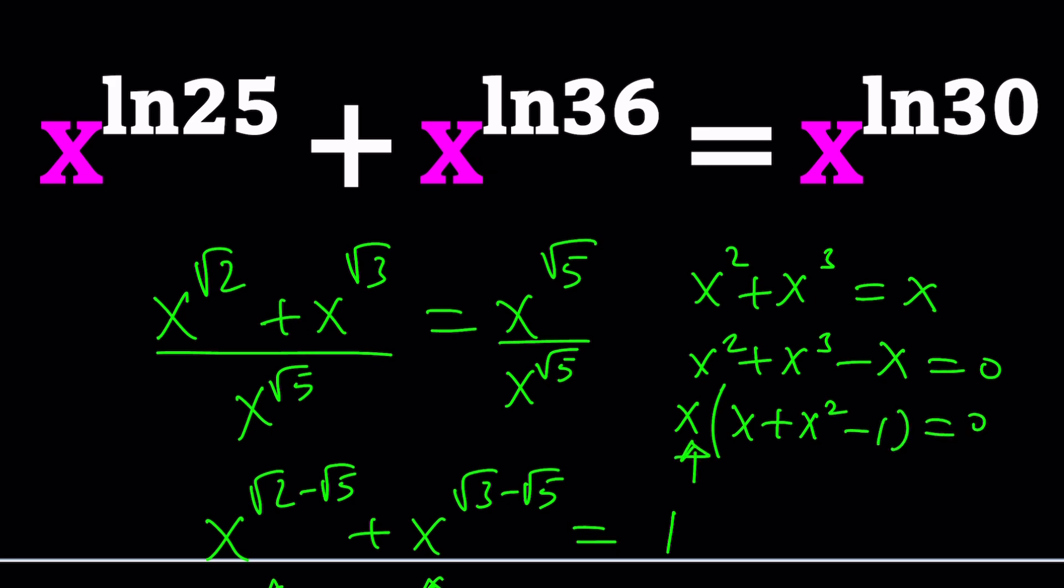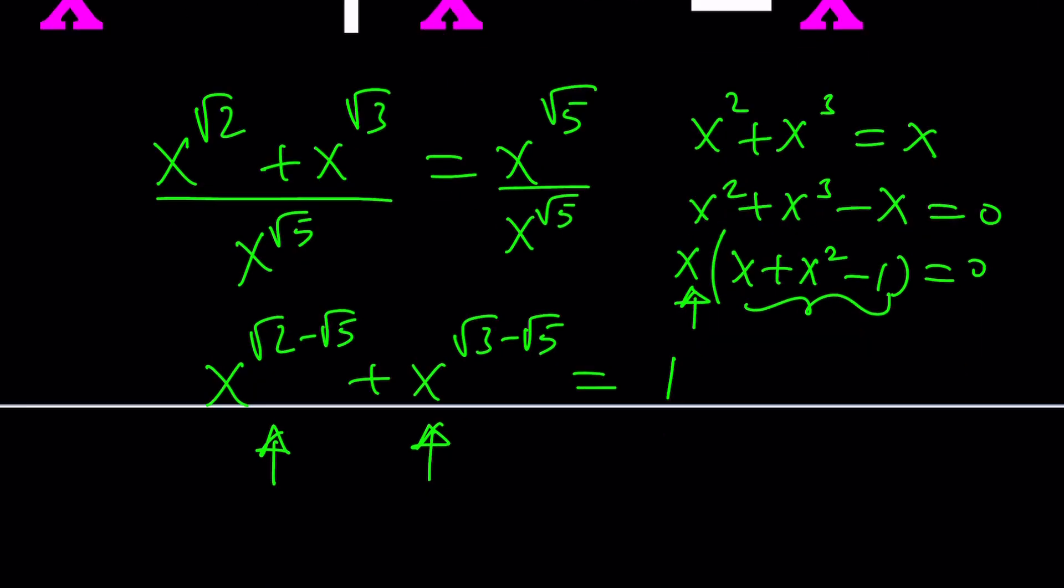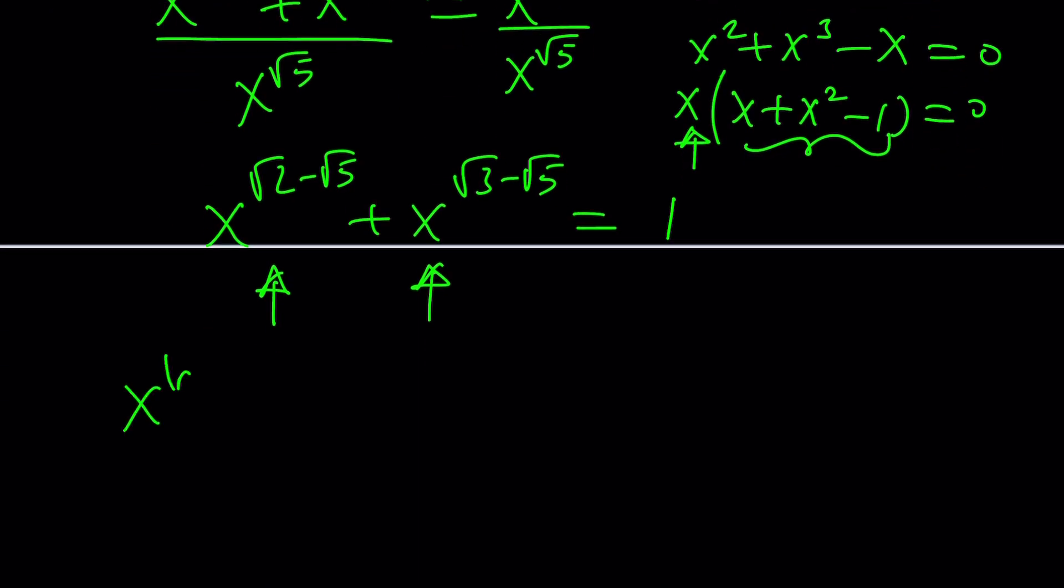That would give us x times x plus x squared minus 1 equals 0. Obviously, x equals 0 is a solution. And this is a quadratic which can be solved with root 5 and so on. But can we not do the same thing here? Maybe factor out the smallest.